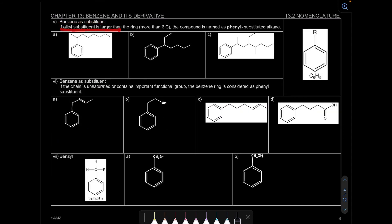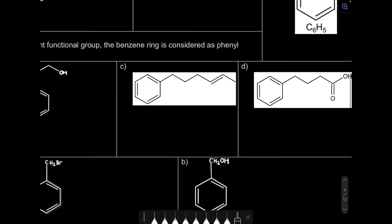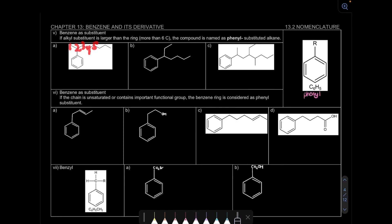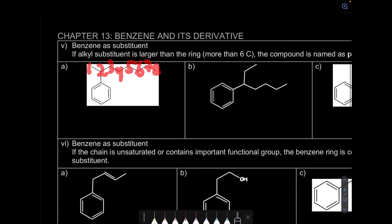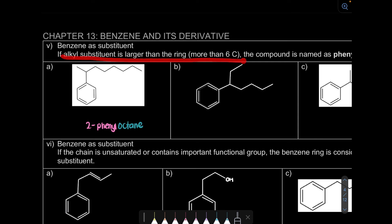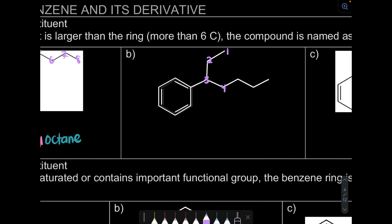Now let's look at benzene as a substituent. When benzene is a substituent, we call it phenyl (C6H5). For example A, the longest carbon chain has 8 carbons — that's octane (or octene). Benzene is the substituent at carbon 2, so the name is 2-phenyloctane. For question B, the chain has 7 carbons — more than 6 — so the chain is the parent. The phenyl is at carbon 3: 3-phenylheptane.